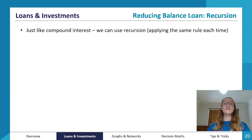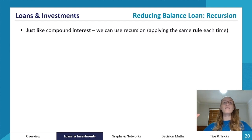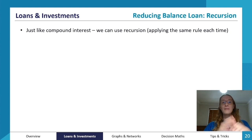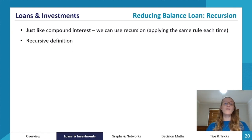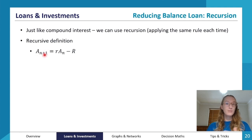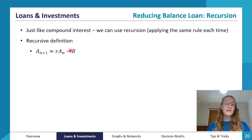We can calculate reducing balance loans using recursion, just like compound interest. Recursion means applying the same rule every time. Conceptually, we start with our initial amount — the money left owed on the loan — and each time period the lender charges interest on that, then we make a repayment. The recursive definition models this: the value of the loan after n+1 time periods equals the previous value multiplied by r (the compound interest growth rate), minus capital R, our repayment amount for that compounding period.